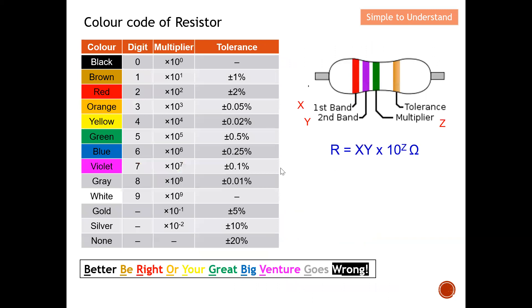The key purpose here is to understand the color code of a resistor. This is a table you need to understand in order to relate the color codes to resistor values. The digits 0 through 9 can each be represented by a different color: black, brown, red, orange, yellow, green, blue, violet, grey, and white — in sequence from 0 all the way to 9.